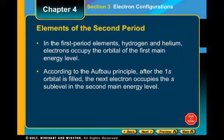We can use the periodic table as a cheat sheet for writing electron configurations. The periodic table has S, P, D, and F blocks. The S block starts at hydrogen, goes down to francium, over to radium, and up to helium — helium is considered part of the S block. The S sublevel can hold 2 electrons, and if you count, we have two columns in the S block.